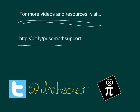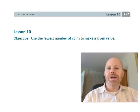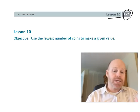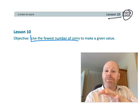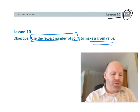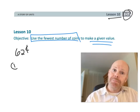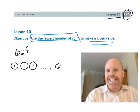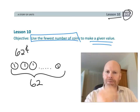This is second grade module 7 lesson 10. In this lesson we're going to continue using coins. This time we're going to be strategizing and trying to be efficient — using the fewest number of coins to make a given value. For example, if we're trying to make 62 cents, we could use 62 pennies, but that would not be very efficient. The goal is to find the fewest number of coins to make 62 cents.